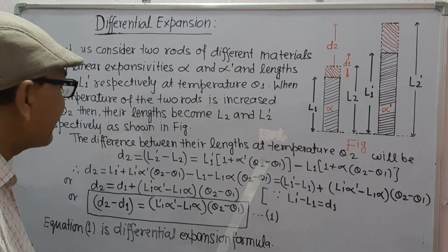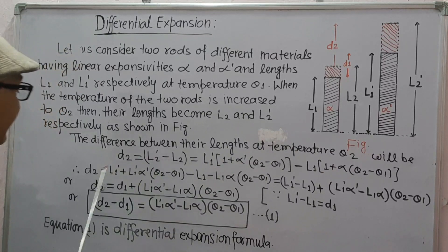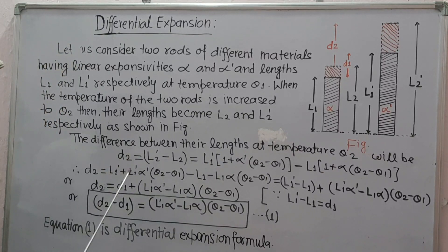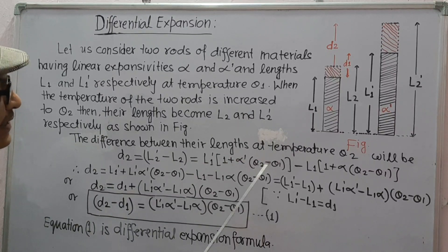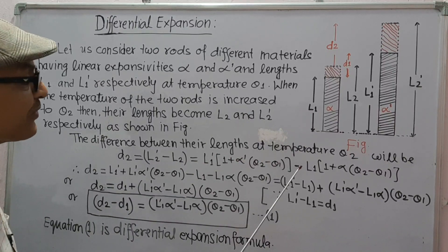Opening these two brackets, D2 is equal to L1 dash plus L1 dash alpha dash (theta 2 minus theta 1) minus L1 minus L1 alpha (theta 2 minus theta 1).